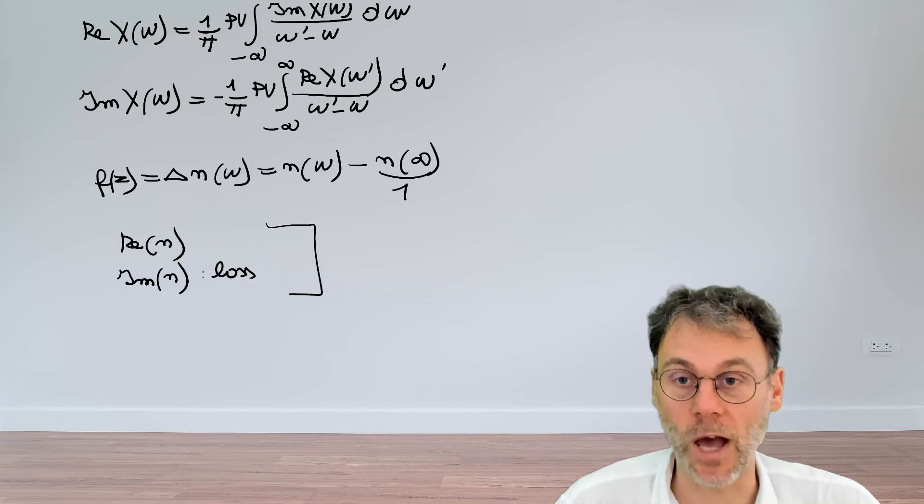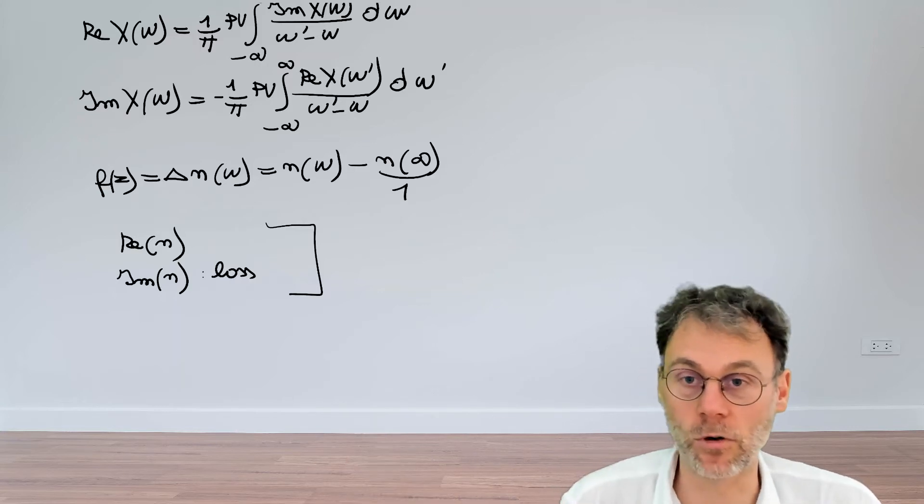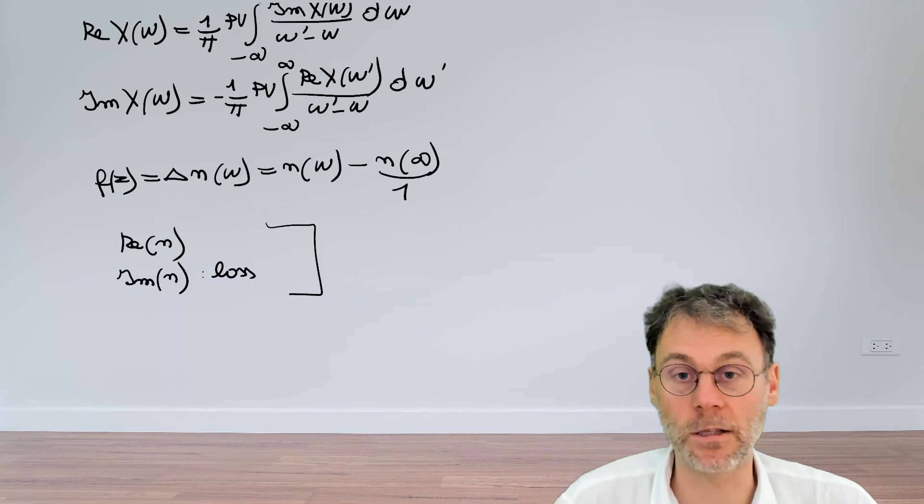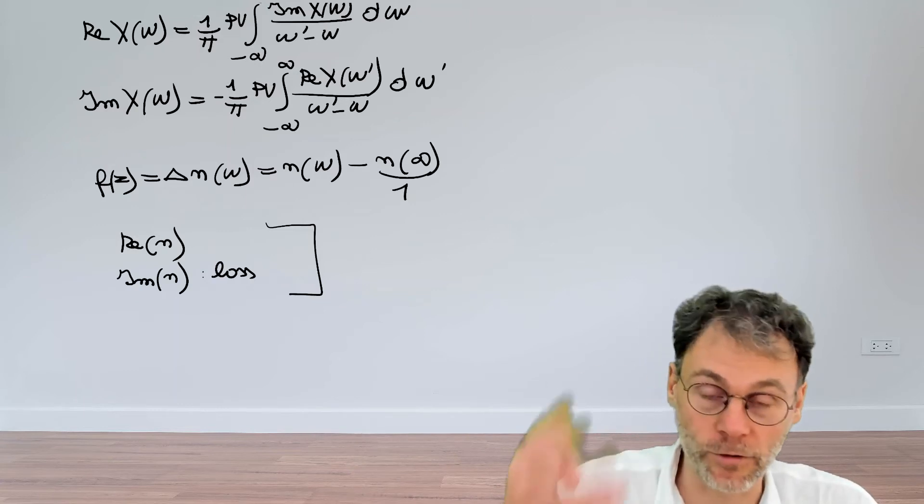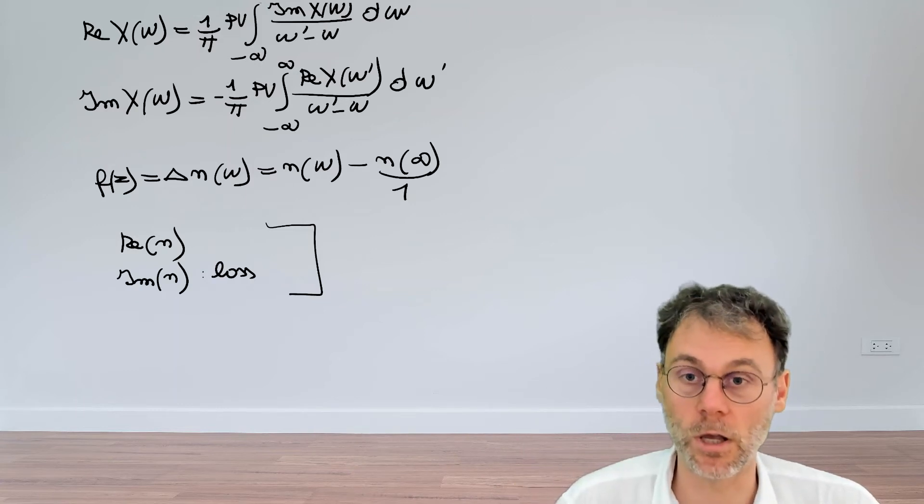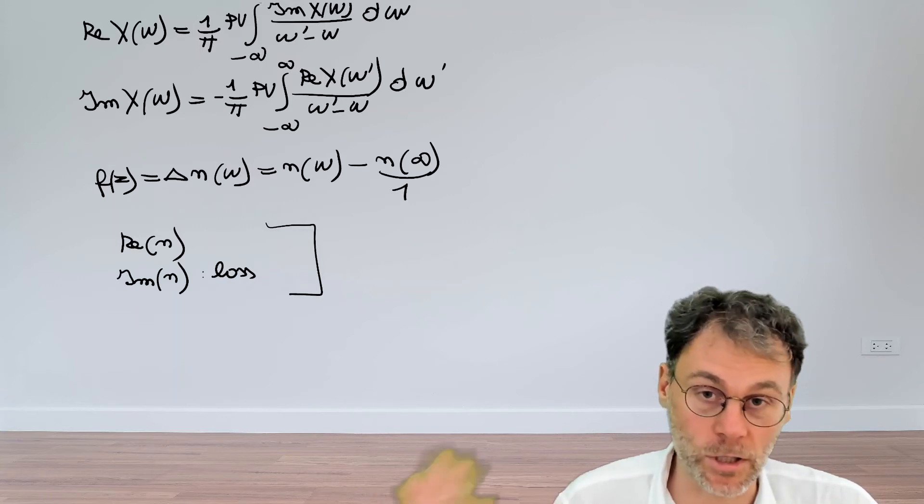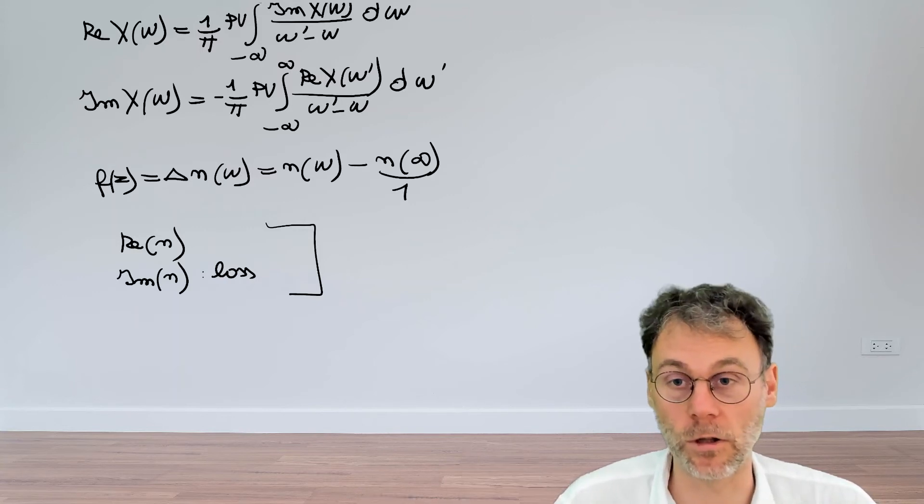And causality of course means that if you have a certain cause that causes a certain effect, that the effect obviously should come after the stimulus, after the cause. So Kramers-Kronig is intimately related to causality, which is another very important physical concept.